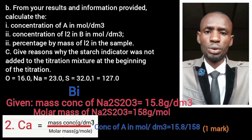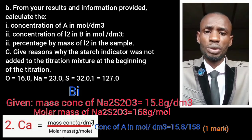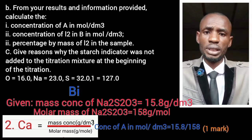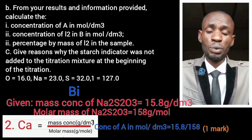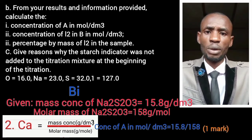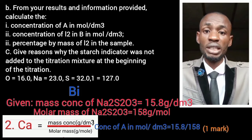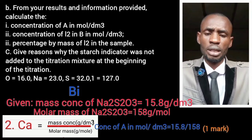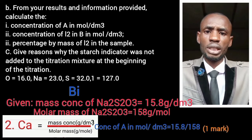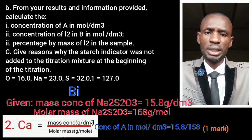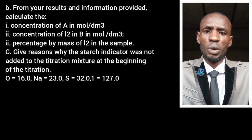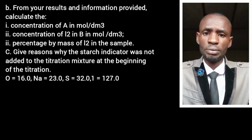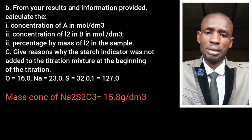Take note. If we are to calculate the concentration of A in mol per dm³, which is our sodium thiosulfate, there are two formulas we can use. This choice depends on what we were given in the question. If you check carefully, to calculate the concentration of sodium thiosulfate, we were given the mass concentration already — it is given in grams per dm³, and that is the mass concentration.